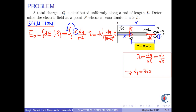Also, since the charge is distributed uniformly, we have lambda as total charge Q over L. Here, we don't write negative Q — we insert the negativity of this charge to find the direction of the electric field. Therefore, dq becomes Q over L times dx.